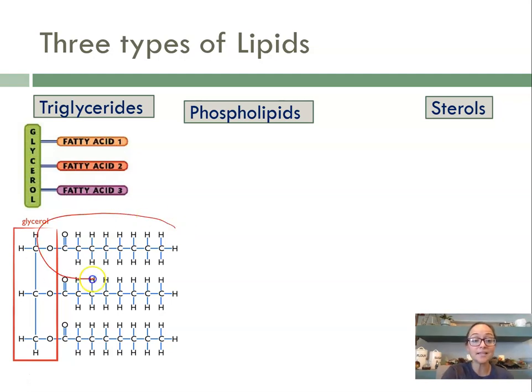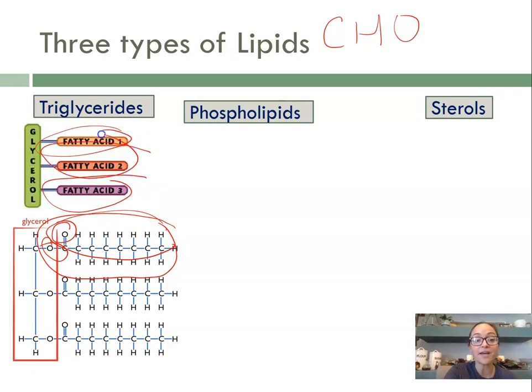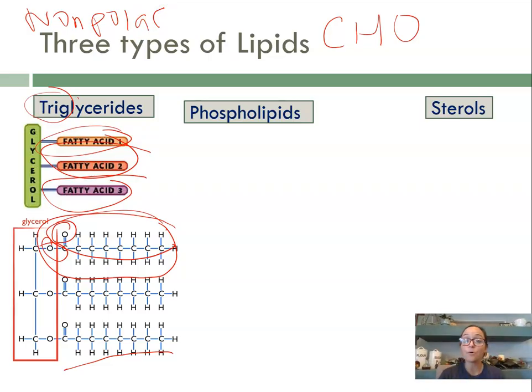This fatty acid is made of hydrogens and carbons, and we also see some oxygens. Lipids, their three main elements of life are C, H, and O, just like we saw in carbohydrates. There's three fatty acids, that's why it's called a triglyceride. One of the major properties of lipids is that they are nonpolar, so they are nonpolar or hydrophobic. They repel water, they do not mix well with water.